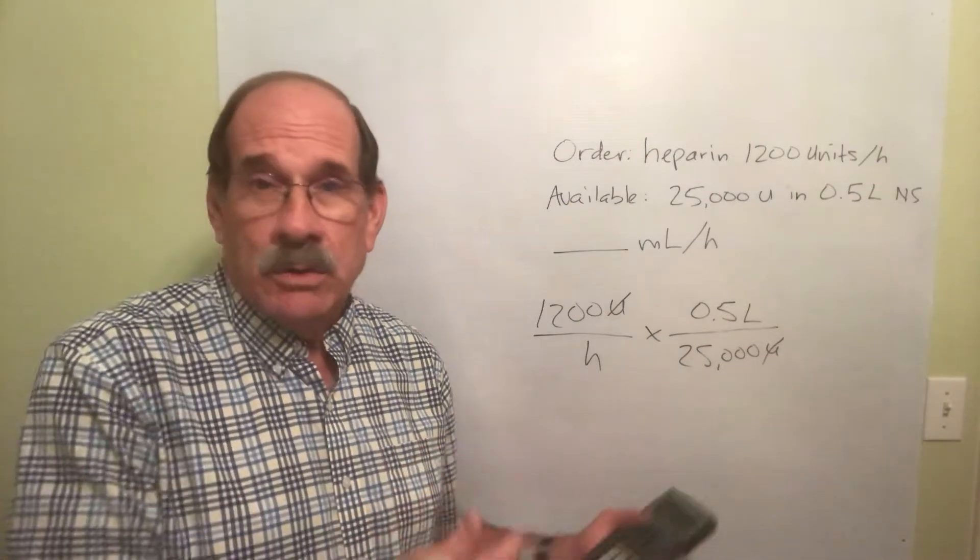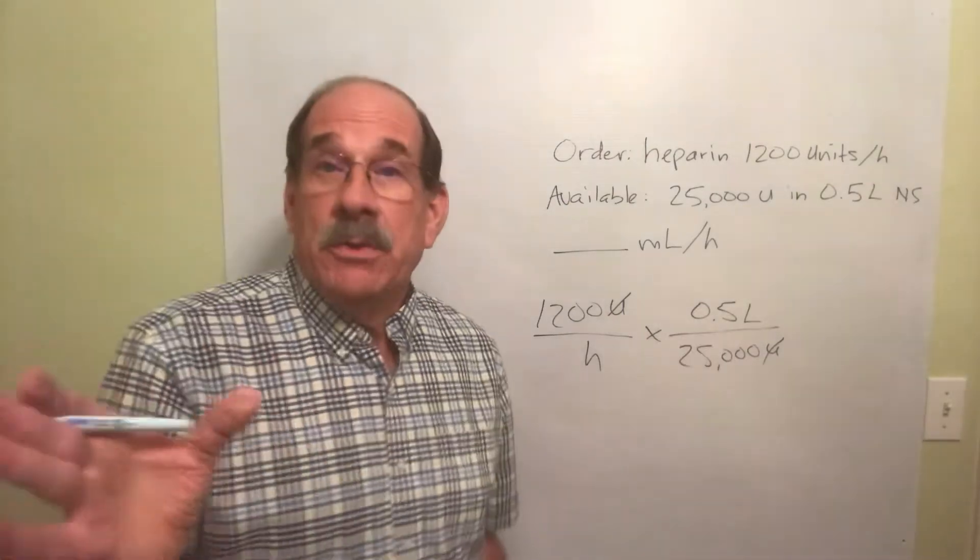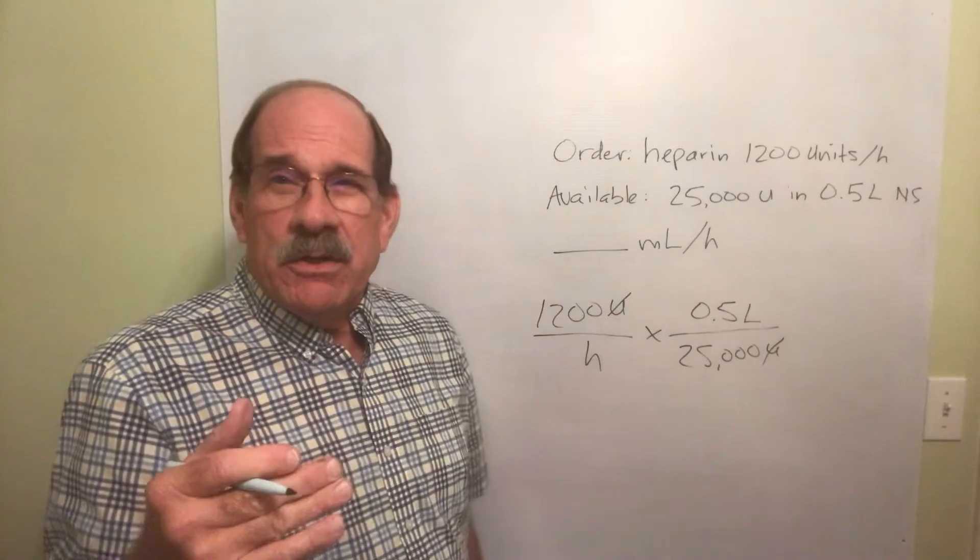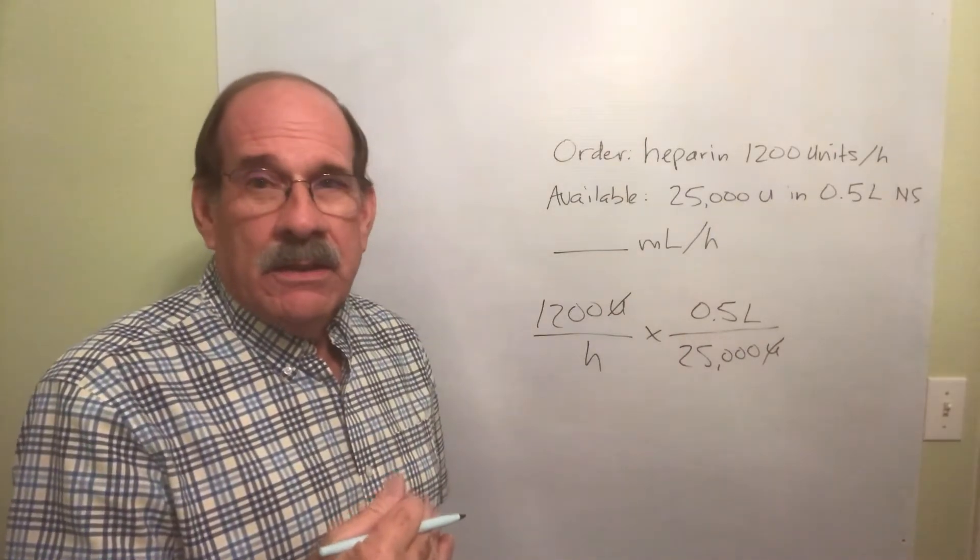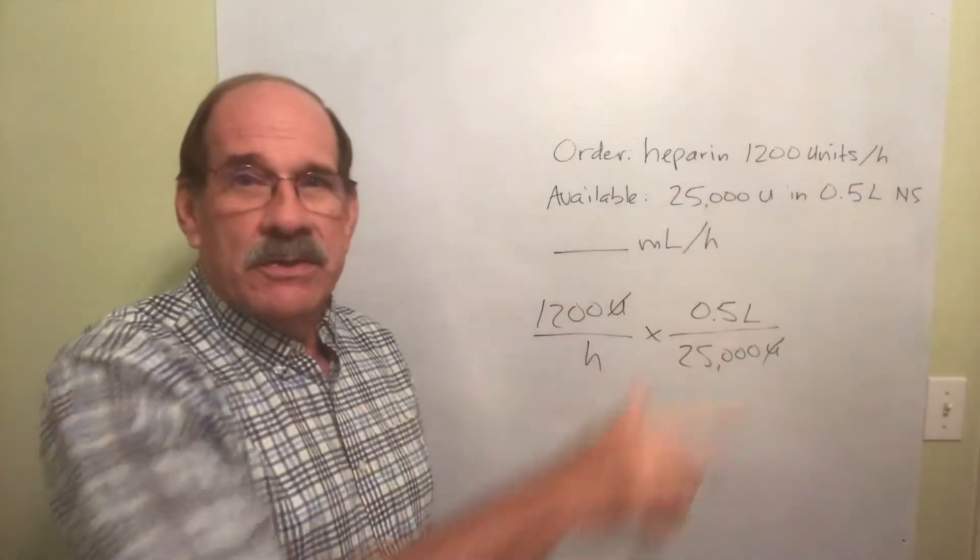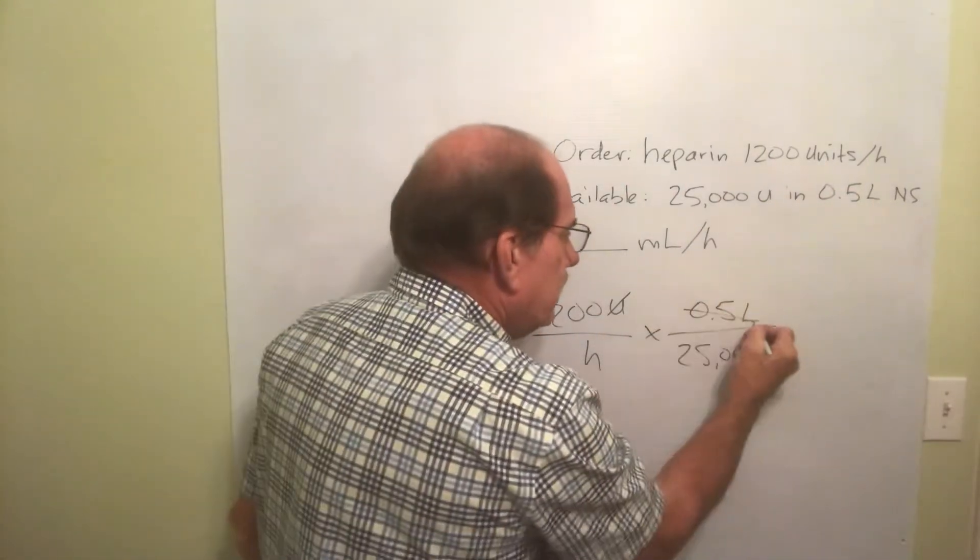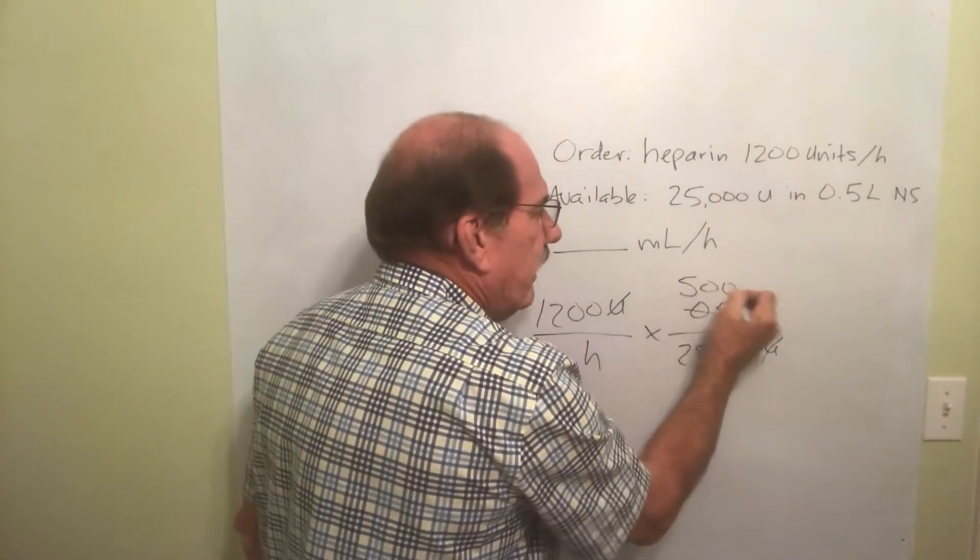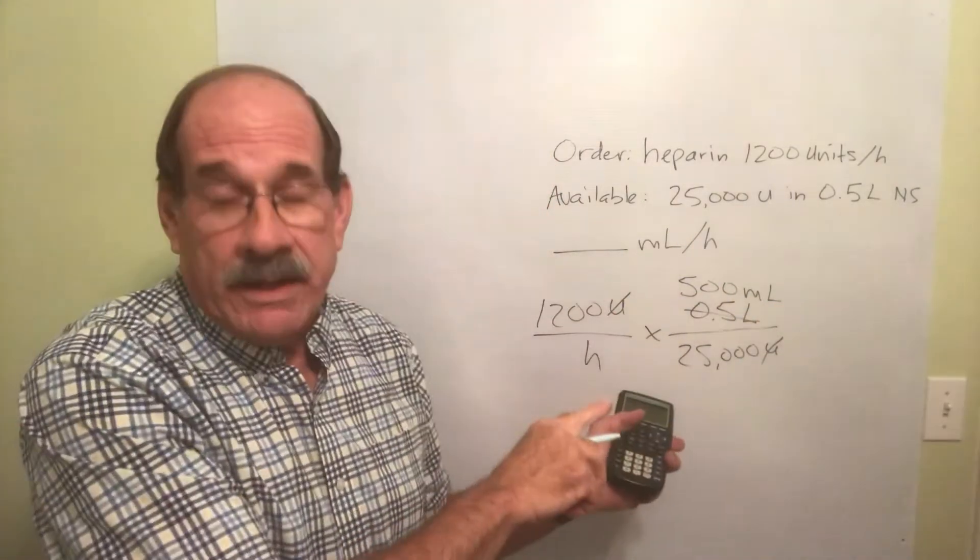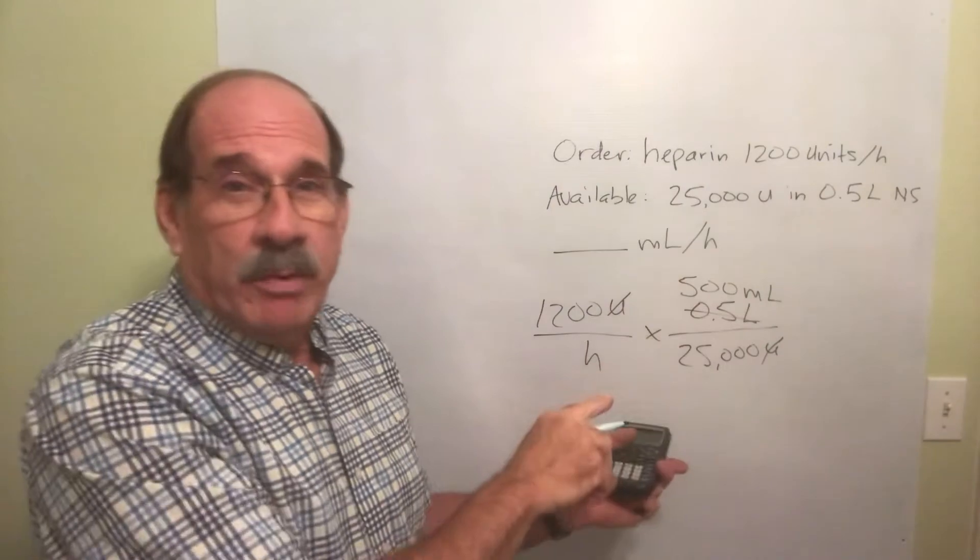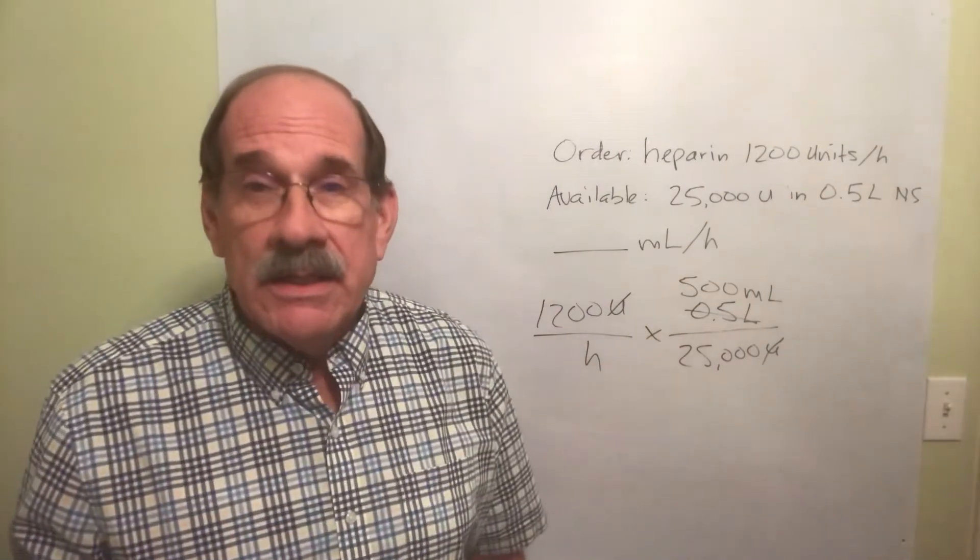I can do it now, do it later, whatever. Let's do it now. Recall now, how do you convert 0.5 liters into milliliters? You just move your decimal three places to the right. Boom, boom, boom. And so this becomes 500 milliliters. Now you better know that already. If that was something brand new to you, you're way behind and need some help.